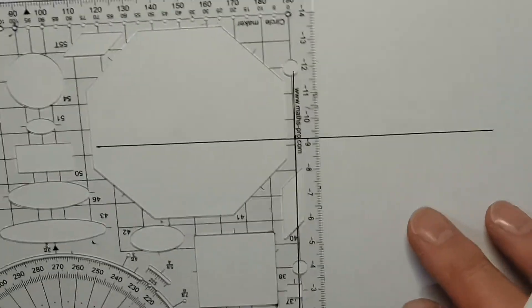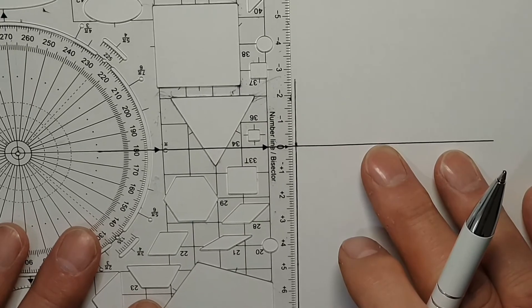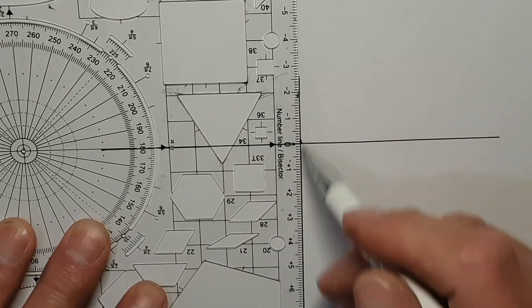I could also just use a grid line, line it up, and just draw a bisector that way.